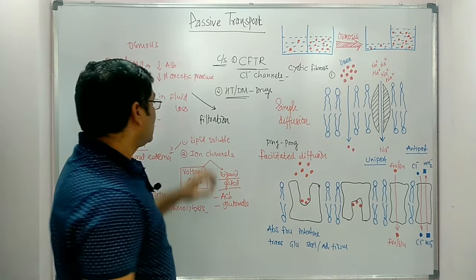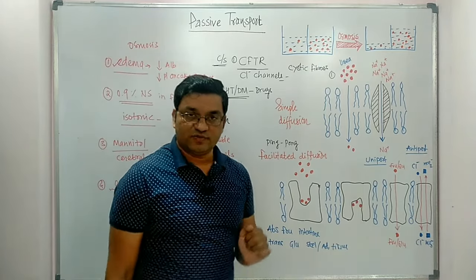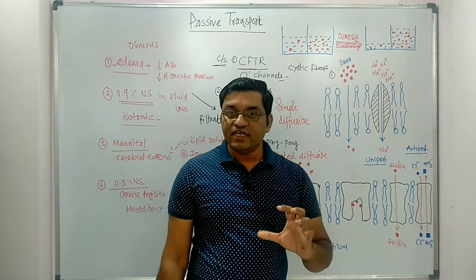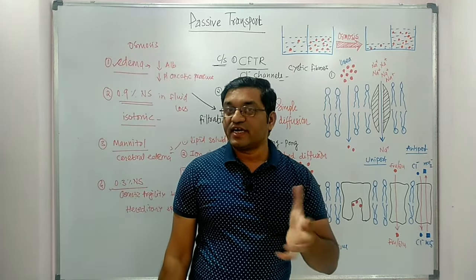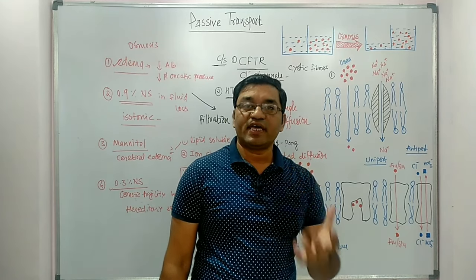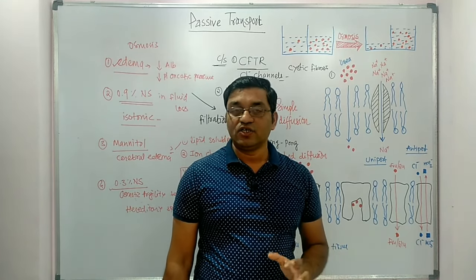0.3% Normal Saline is used in the Osmotic Fragility Test in Hereditary Spherocytosis. This solution is hypotonic, so RBC fragility occurs easily in Hereditary Spherocytosis, while normal RBCs do not rupture in this hypotonic solution. So the clinical applications related to Osmosis are: edema, isotonic solution, hypertonic solution in cerebral edema, and hypotonic solution in the osmotic fragility test for Hereditary Spherocytosis.